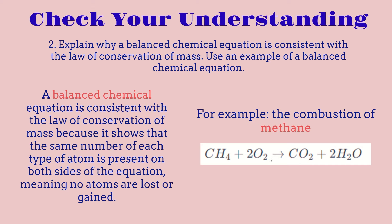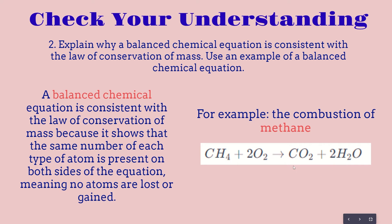We can check by looking at each element. Carbon has one atom on the left side and one atom on the right side. For hydrogen, there are four total atoms on the left side and four total atoms on the right side. For oxygen, there are four total atoms on the left side and four total atoms on the right side — we get two from one molecule and two from another. This shows how balanced chemical equations are consistent with the law of conservation of mass.